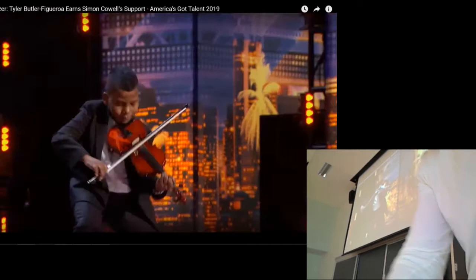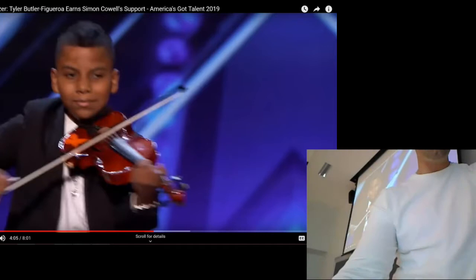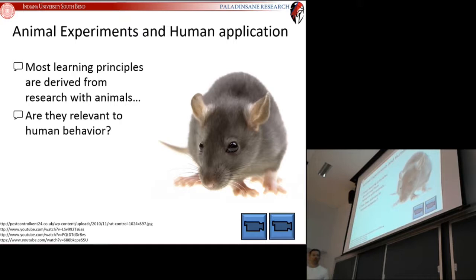There's some things different about human learning that we'll talk about later in the course. But most of how we learn and how we develop skills are the same as how animals do those as well. Are they relevant in human behavior? We saw two examples of extraordinary behavior, one in an animal, one in a human being.